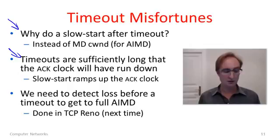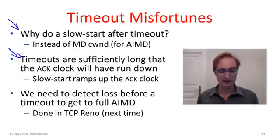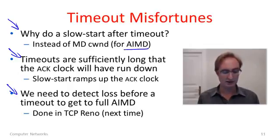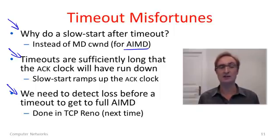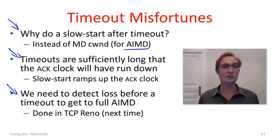So if we're going to fix this and really get to AIMD, we need some way to detect loss other than a timeout. This is what we'll see next with other TCP heuristics used in TCP Reno. See you in a few minutes.